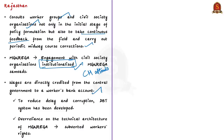Previously, money was handed to workers through other channels, but the government has now come up with the direct benefit transfer system to reduce delay and corruption. In this, they directly credit money into workers' accounts. But on the ground, there are some problems. Let us see what these problems are.